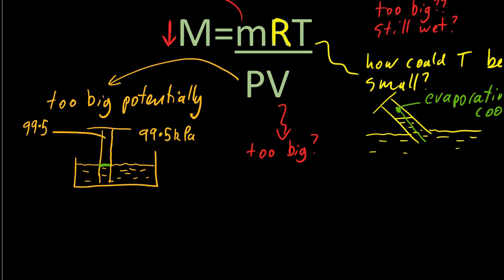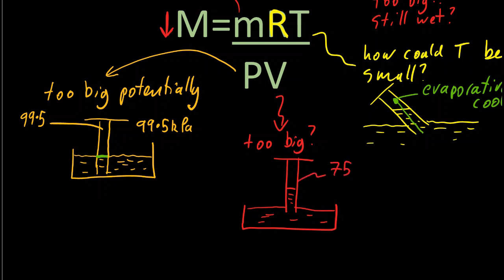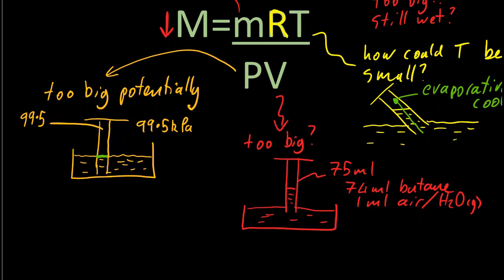Let's take a look at the volume. Was the volume too big? Drawing out the apparatus again: I measured the volume of gas to be 75 millilitres, but maybe there was only 74 millilitres of butane and other gases were present - like air coming out of the water, or water vapour taking up space. So I thought there was 75 ml but that was too big; there was only maybe 74, and perhaps that could explain it.